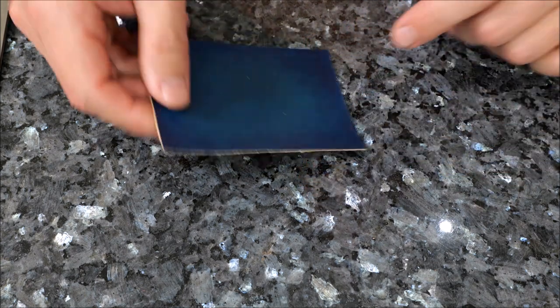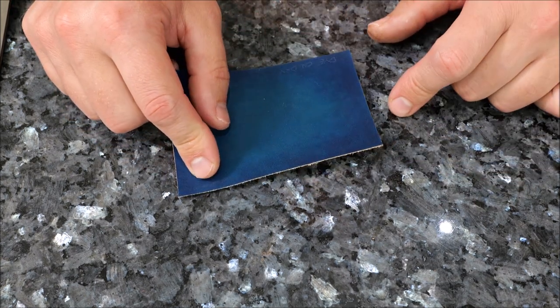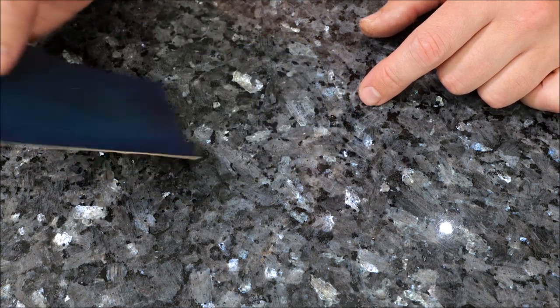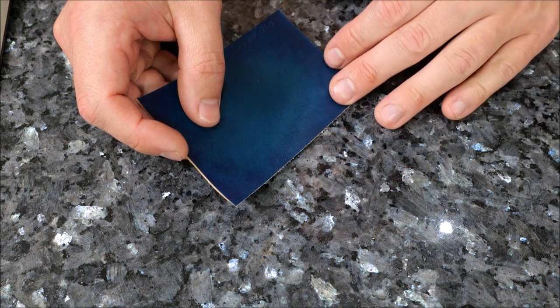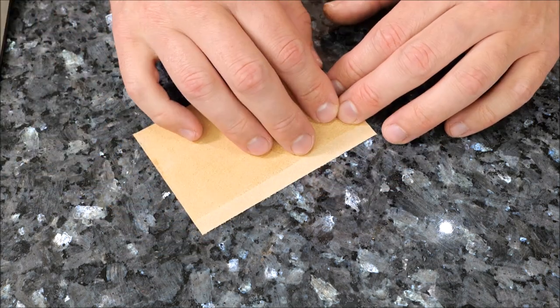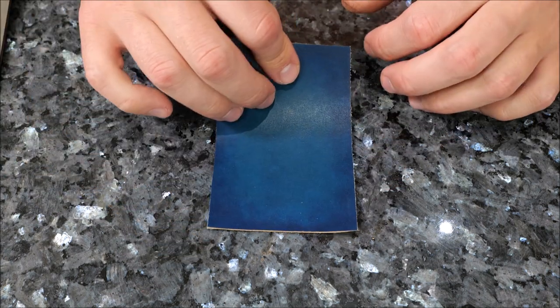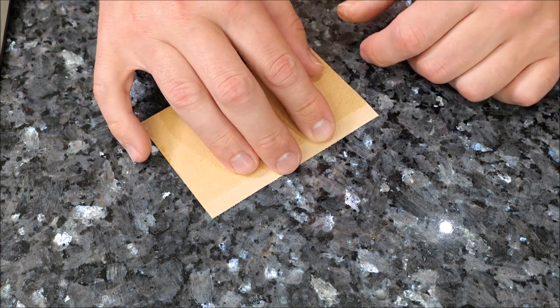One word of caution though, if you haven't already dyed a piece of vegetable tanned leather, I wouldn't do this, because any wax that gets on there will prevent the dye from going through. So chrome tanned leather or pre-dyed leather such as this is absolutely fine to use this technique.